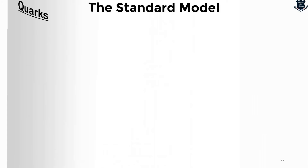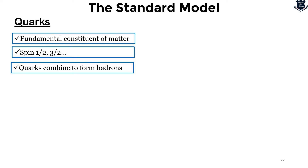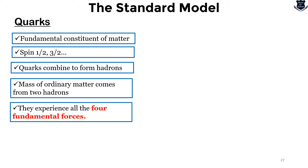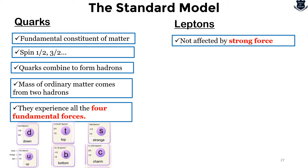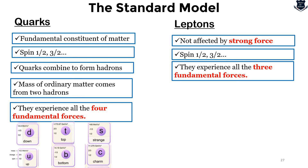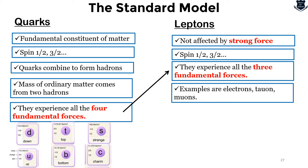Quarks are the fundamental constituent of matter, also spin one-half. Quarks combine to form hadrons, and the mass of ordinary matter comes from hadrons. They experience all four forces of nature: top, strange, up, bottom, and charm. Leptons are not affected by the strong force; they have spin one-half and experience all three fundamental forces — examples are electron, tau, tauon, and muons. Quarks experience all four fundamental forces; leptons experience only three.